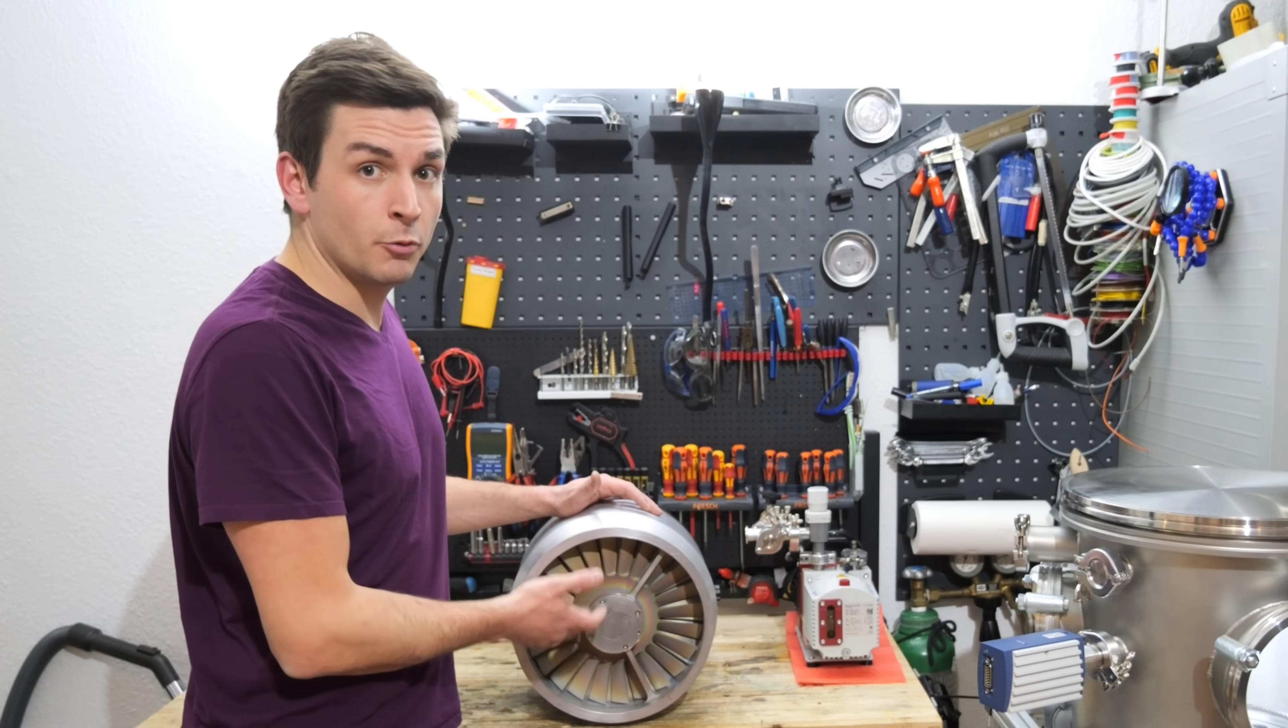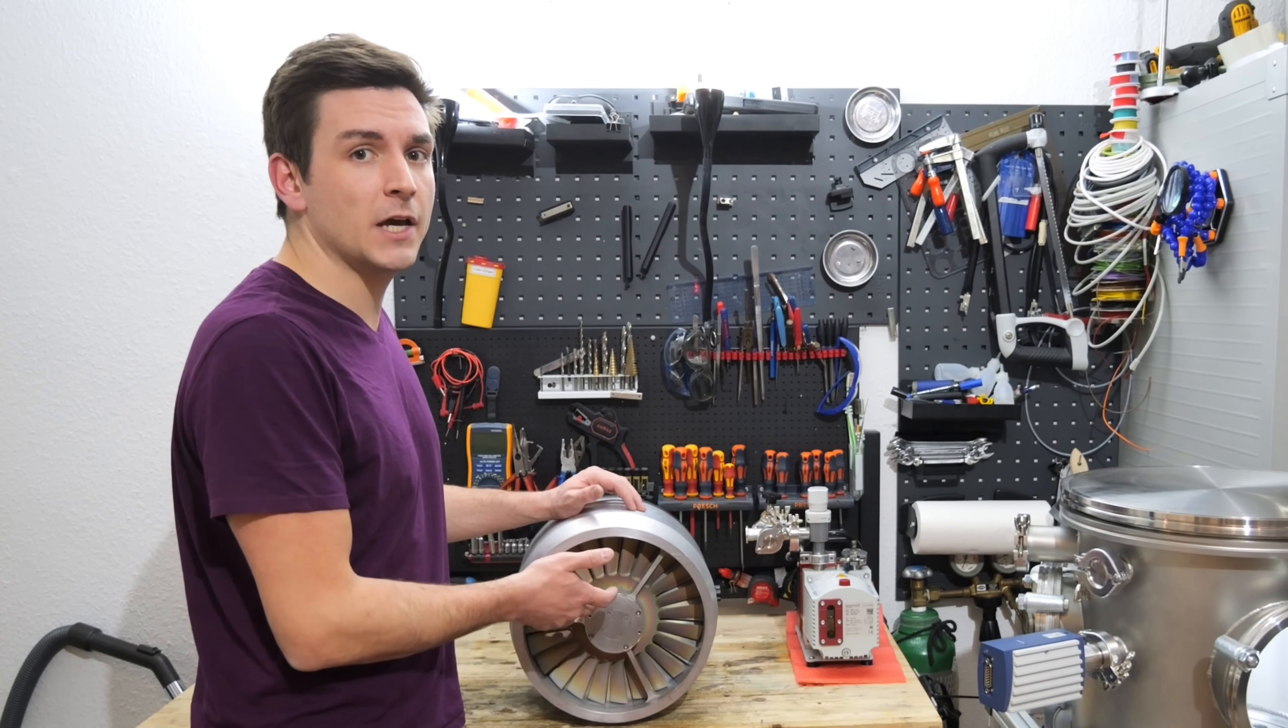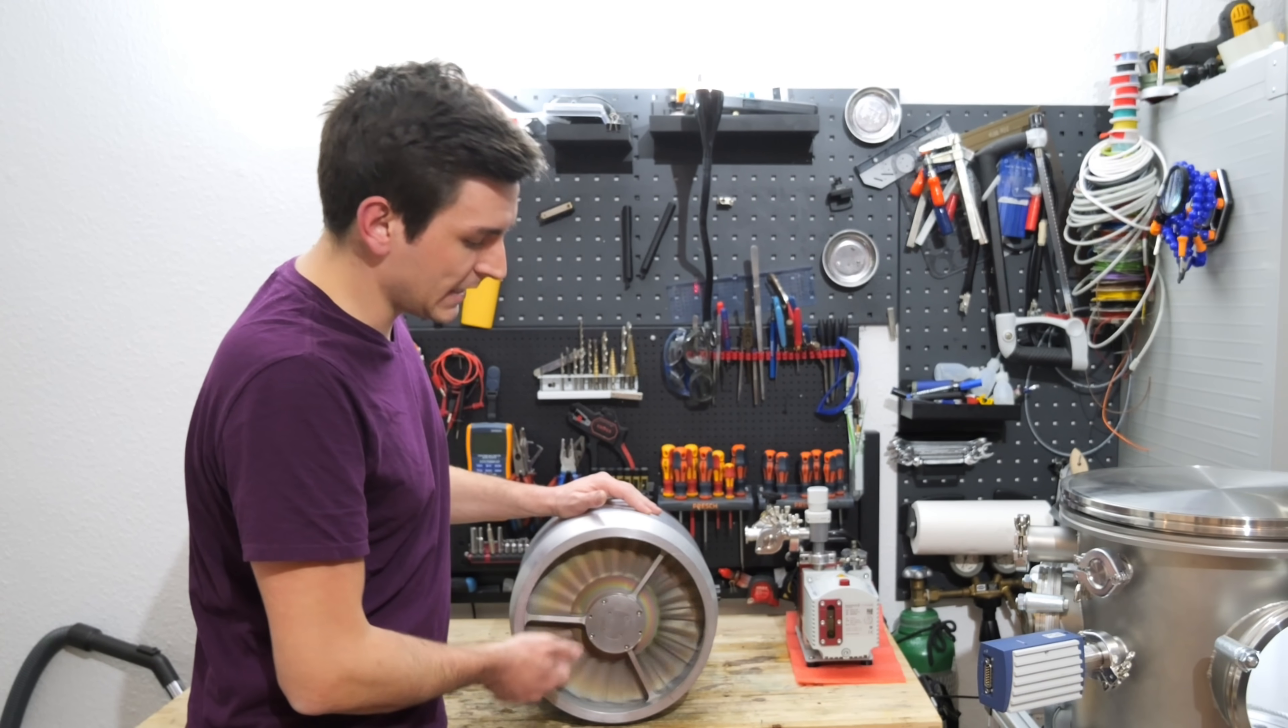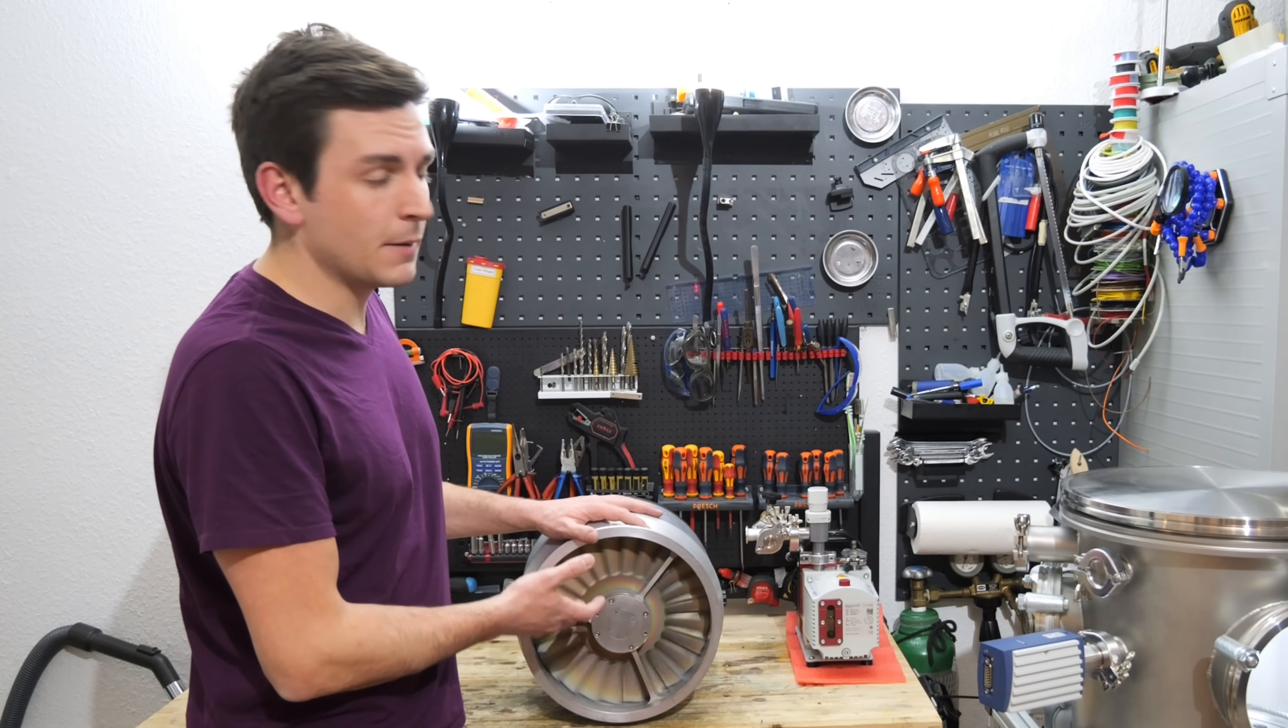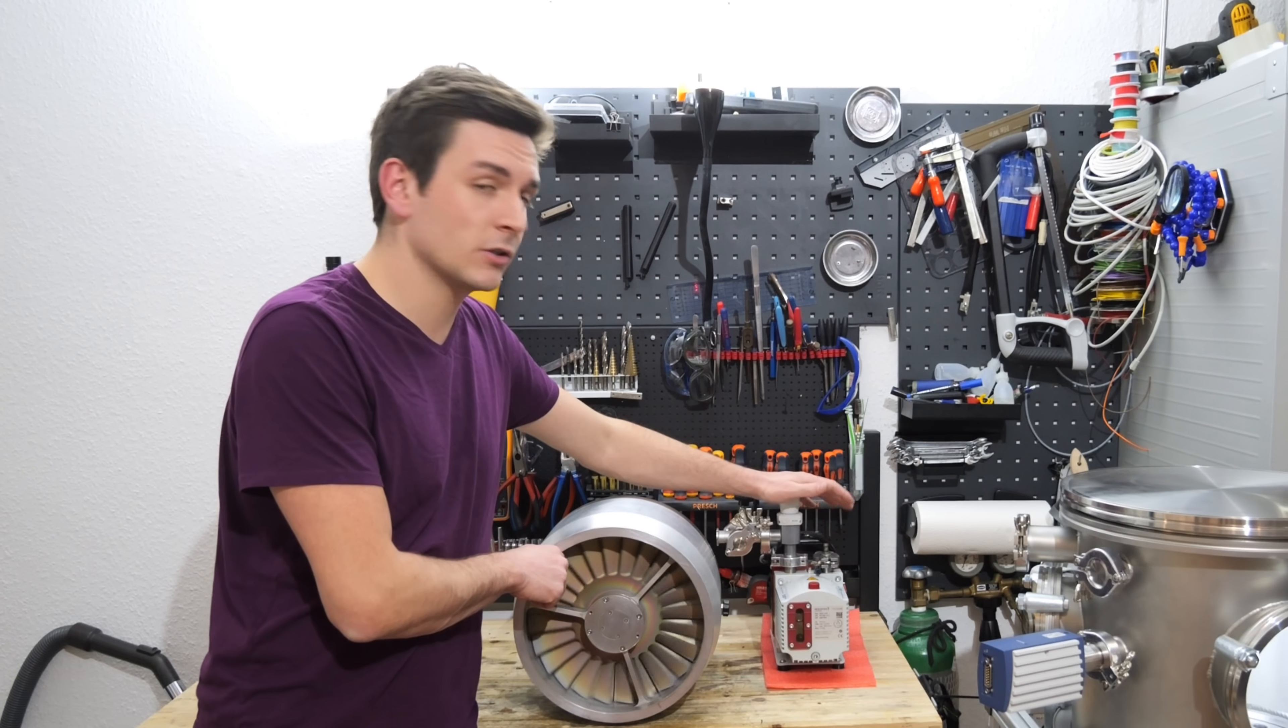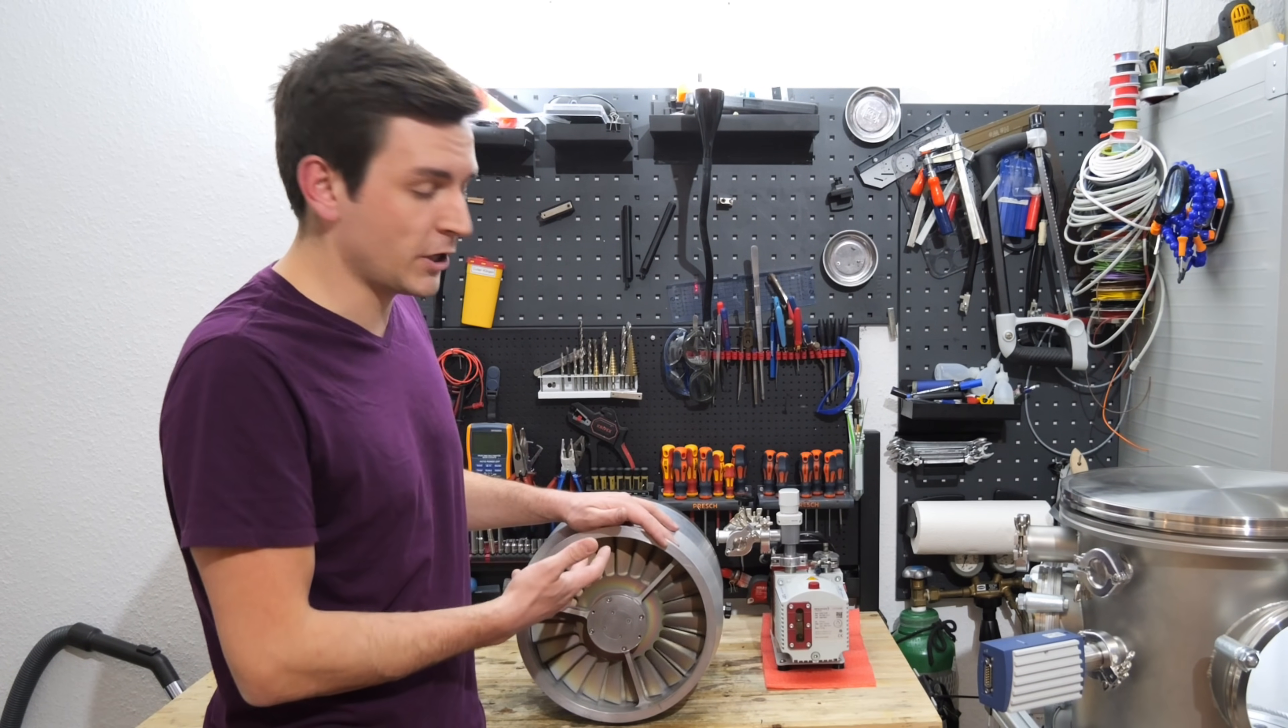This is a turbo molecular pump. In this case it's a Pfeiffer TPH2101, and these pumps are used to create a high vacuum. They're basically the pump you use when a normal rotary vane pump like this one does not suffice and you want to get to lower pressures.